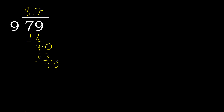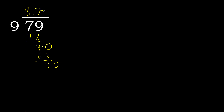Complete. Point. 70. 9 multiplied by 7 is 63. Subtract. Complete — the pattern repeats.